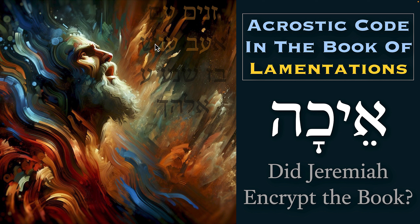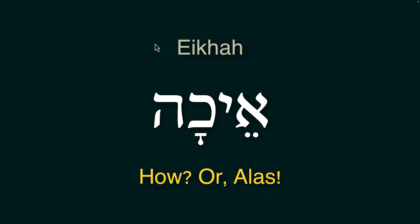Most likely he did and it is not yet deciphered — that's what I think. Eicha means 'how' or 'alas.' That's the title of the Hebrew book of Lamentations, which in English is called Lamentations, but this is the original title because the book begins with this particular word, Eicha.